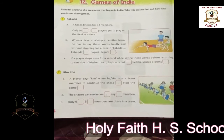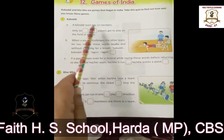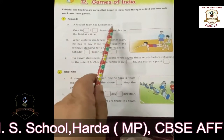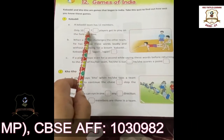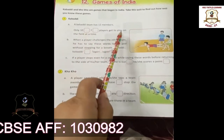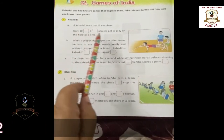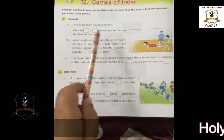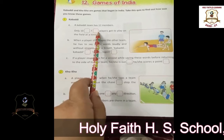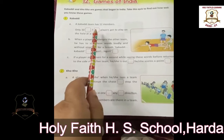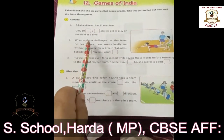Let us answer the questions. A Kabaddi team has 12 members, but only 7 players get to play on the field at a time. How many players get to play on the field at a time? The answer is 7.